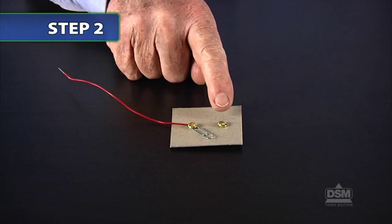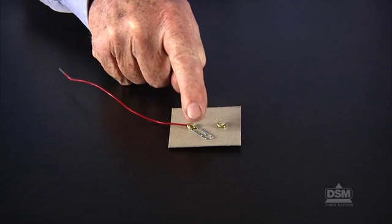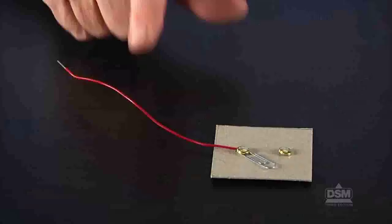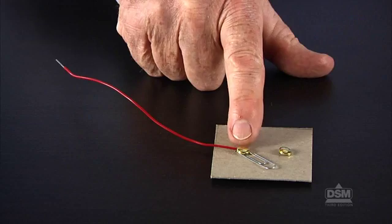Distribute a switch assembly from Activity 5 to each team, and ask students: how many conductors do you see here? Students should identify four conductors: one wire, two paper fasteners, and one paperclip.